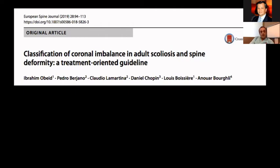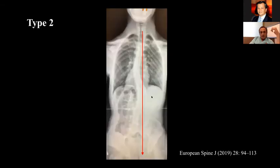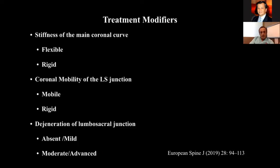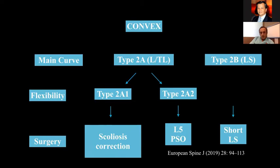The lacking element in the previous classification was coronal balance. Another study published by Berriano, Lamartina, and Obeid added coronal imbalance. According to this paper, if you draw a line and it passes on the concave side, it's type I; if the coronal imbalance passes on the convex side, it's type II. They also described treatment modifiers considering whether the main curve is flexible or rigid, and also account for the lumbosacral junction — mobile versus rigid — providing a good treatment-oriented guideline. We must also consider coronal imbalance.